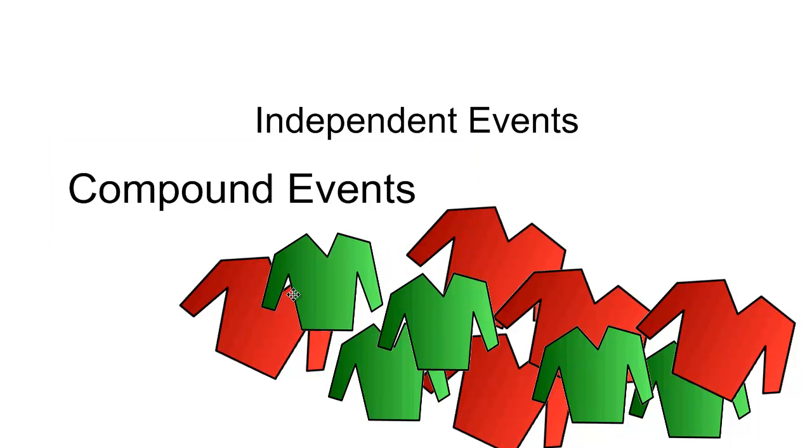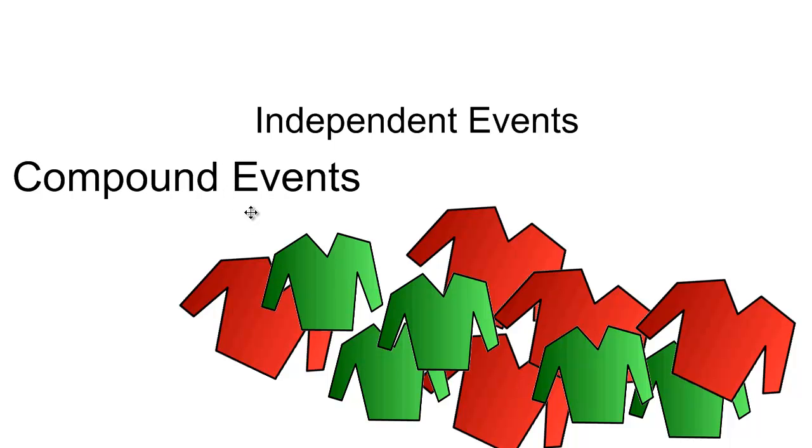An example would be this selection of cardigans. If I were to reach in without looking, pull out a cardigan, look at its color, then put it back, mix up the drawer, and then pull out another cardigan, those would be compound independent events.